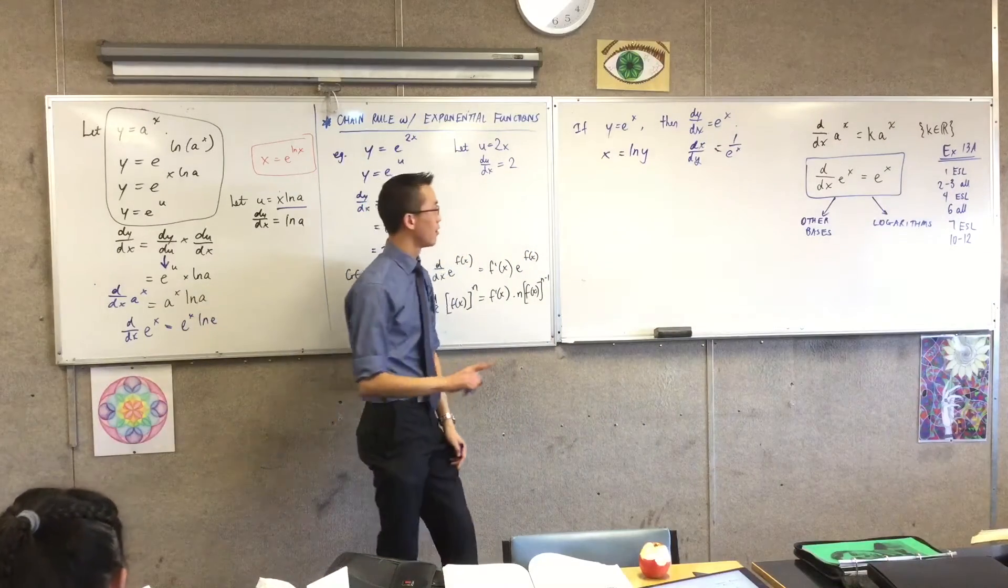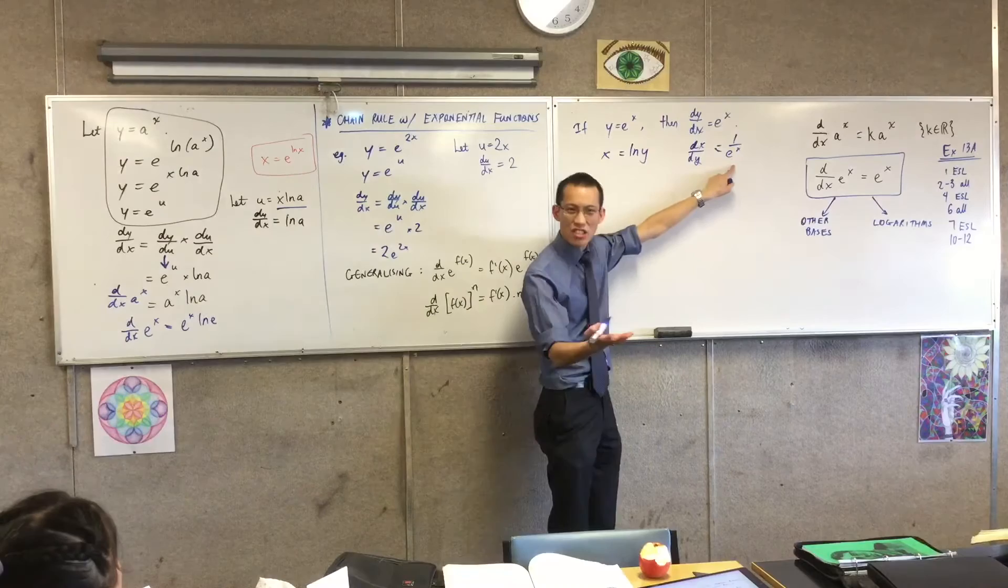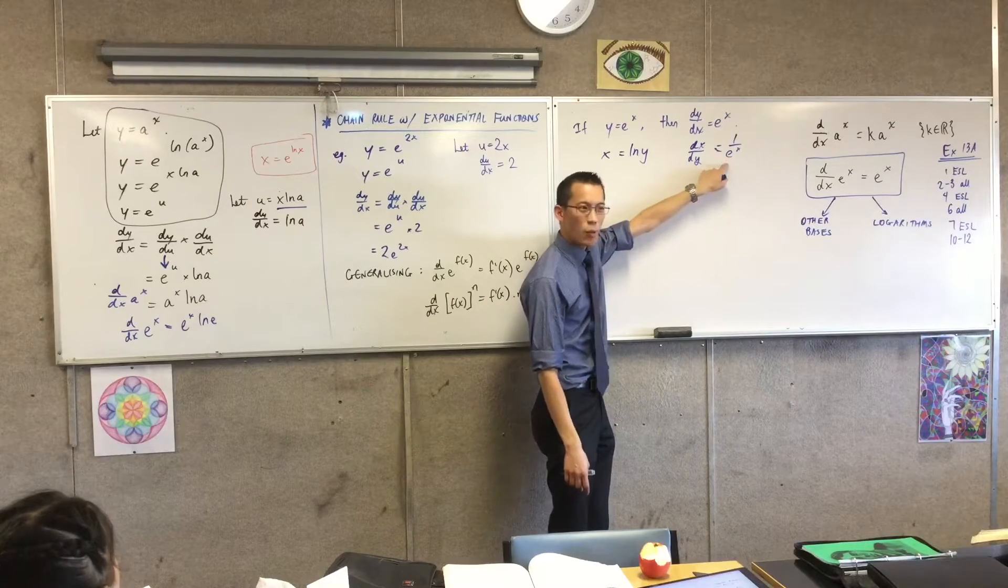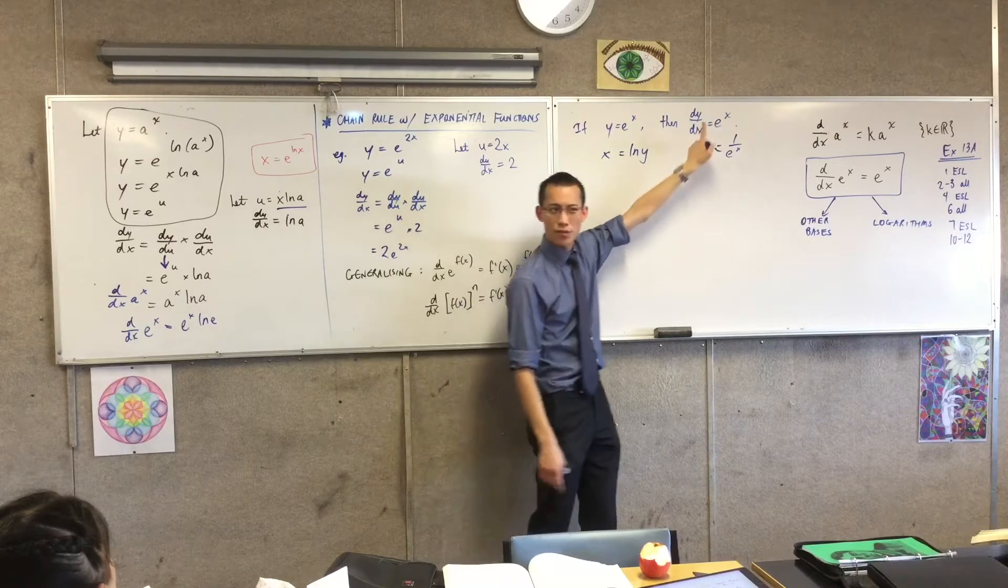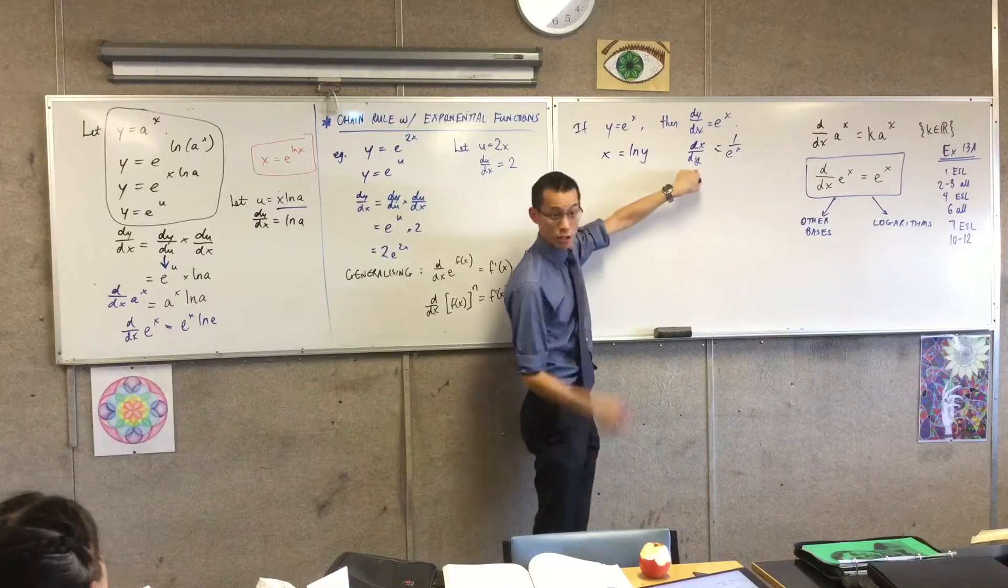Okay, now, last little thing to say, e to the x, right? I actually know what e to the x is. And it's kind of weird to have this as a function of x, because now this on the left hand side is differentiating with respect to y. Do you notice that?